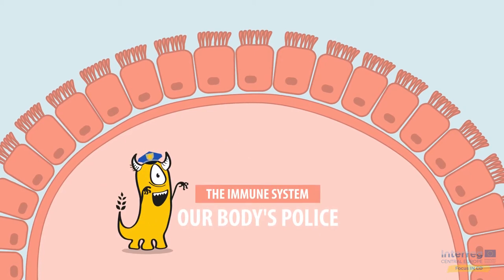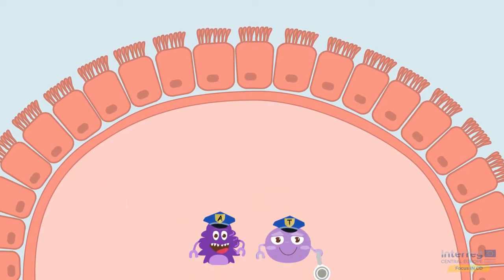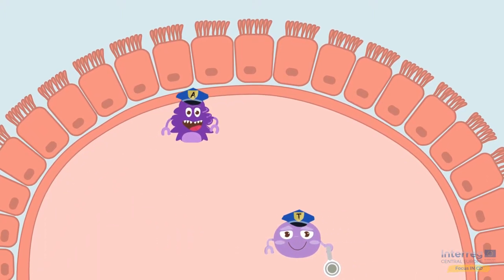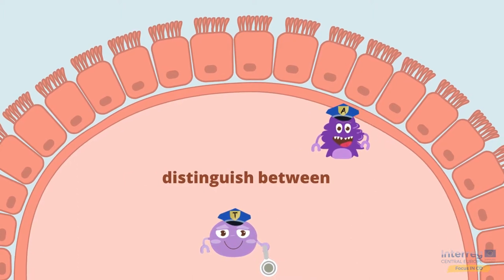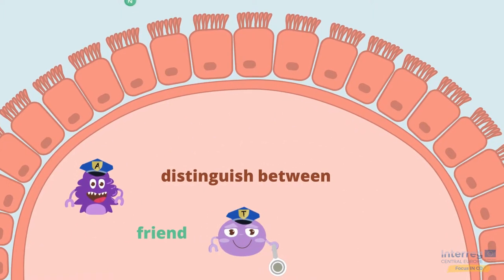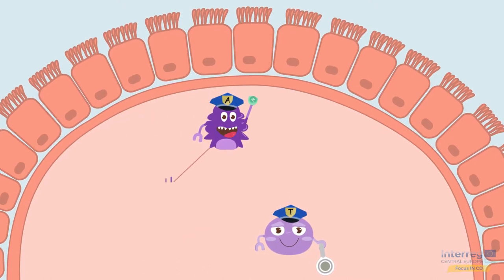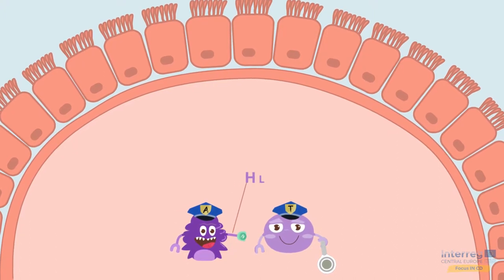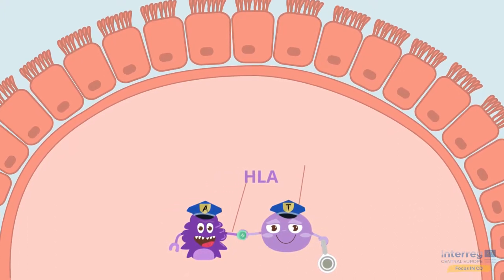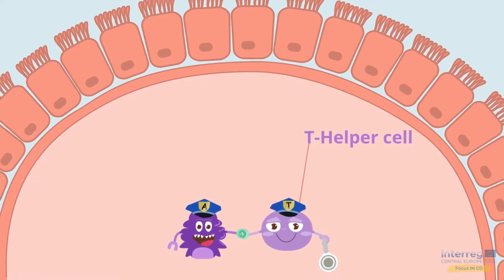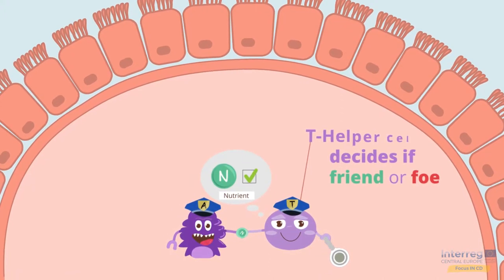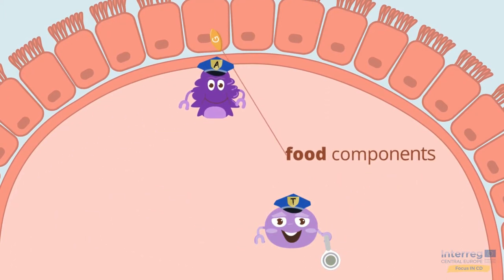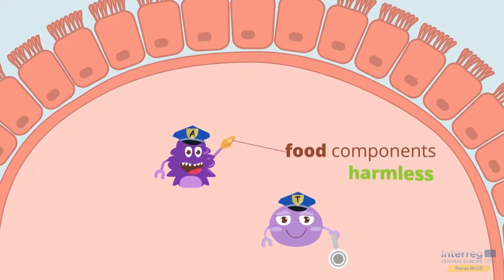The immune system — our body's police. Our immune system is very active in the small intestine. Different immune cells work together like a police force; they have to distinguish between friend and foe. The antigen-presenting cell takes up any protein particles that come along with its little arms called HLA and presents it to a T-helper cell. This type of cell decides if the protein is a friend or foe. For example, food components are usually classified as harmless.